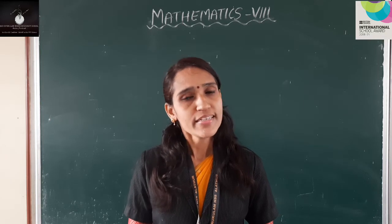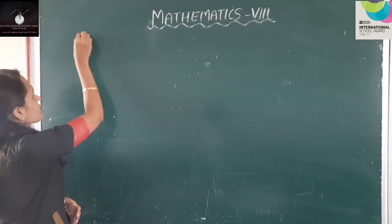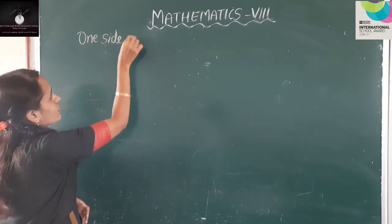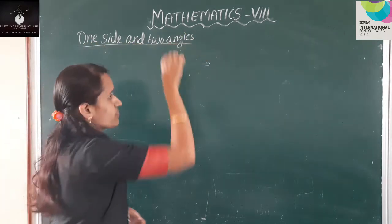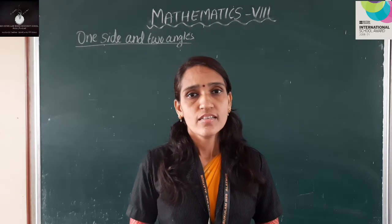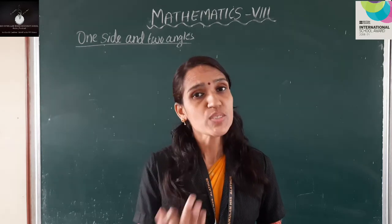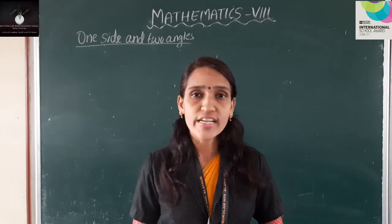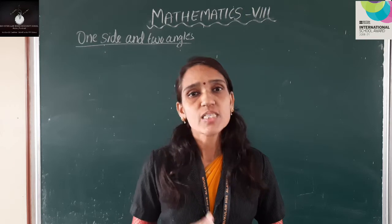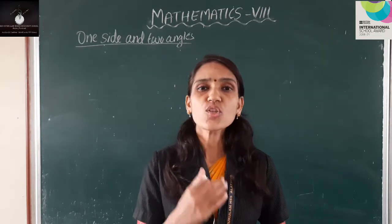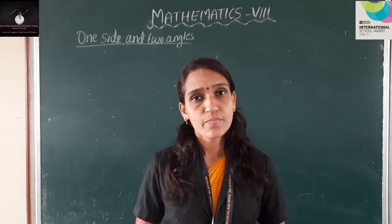Now let us pass on to our new topic: One side and two angles. We have learnt that if all the sides of a triangle are given, we can draw the triangle. If two sides and the angle made by them are given, then also we can draw the triangle. What if one side and the angles on its ends are given? For example, the length of a side is 8 cm and the angles at its ends are 40 degrees and 60 degrees — can you draw the triangle?